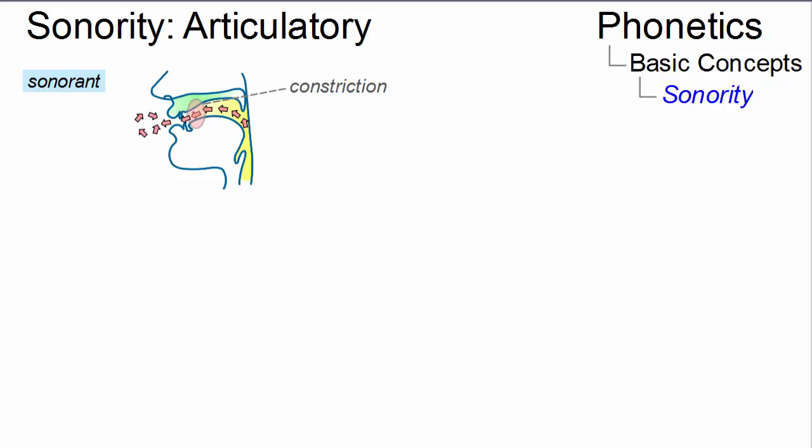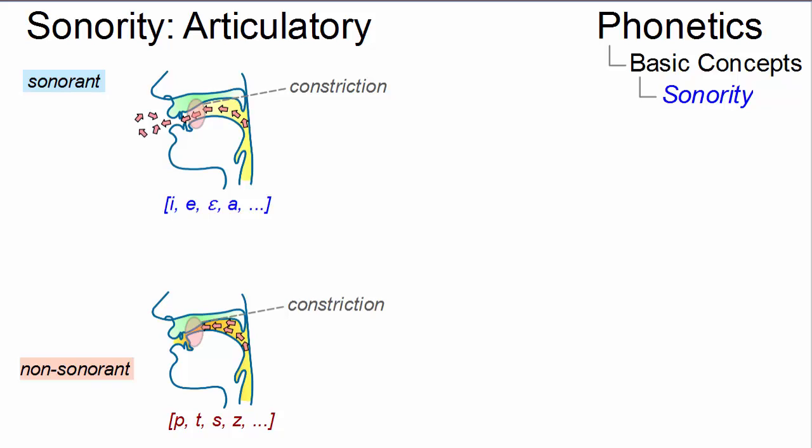This, of course, applies to vowels. Non-sonorant speech sounds are plosive and fricative consonants, since here the air pressure behind the constriction is much higher than the ambient air pressure.